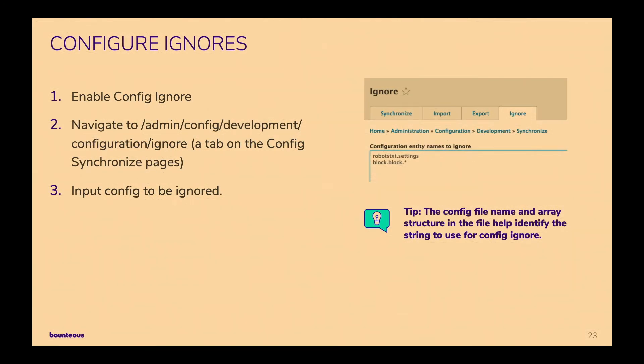For Config Ignore, just enable the module. Go to Admin > Config > Development > Configuration Ignore in the configuration management section — there's a new tab for ignore and you put the patterns of things you want to ignore in there. You can get guidance about what strings to put there by looking at the YAML files. To ignore an entire YAML file, drop the .yml off and put it in. If you want to ignore something very specific, build the array in dot notation to get to the specific setting you want to ignore.